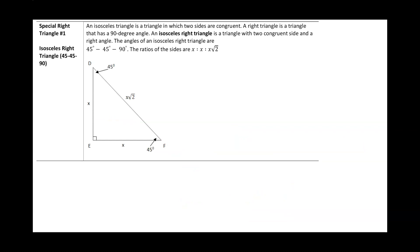Now we're going to talk about a concept we'll use throughout the remainder of the semester quite often — two special right triangles. A right triangle has one 90-degree angle, but the other angles could vary. The first special right triangle is the 45-45-90 right triangle.